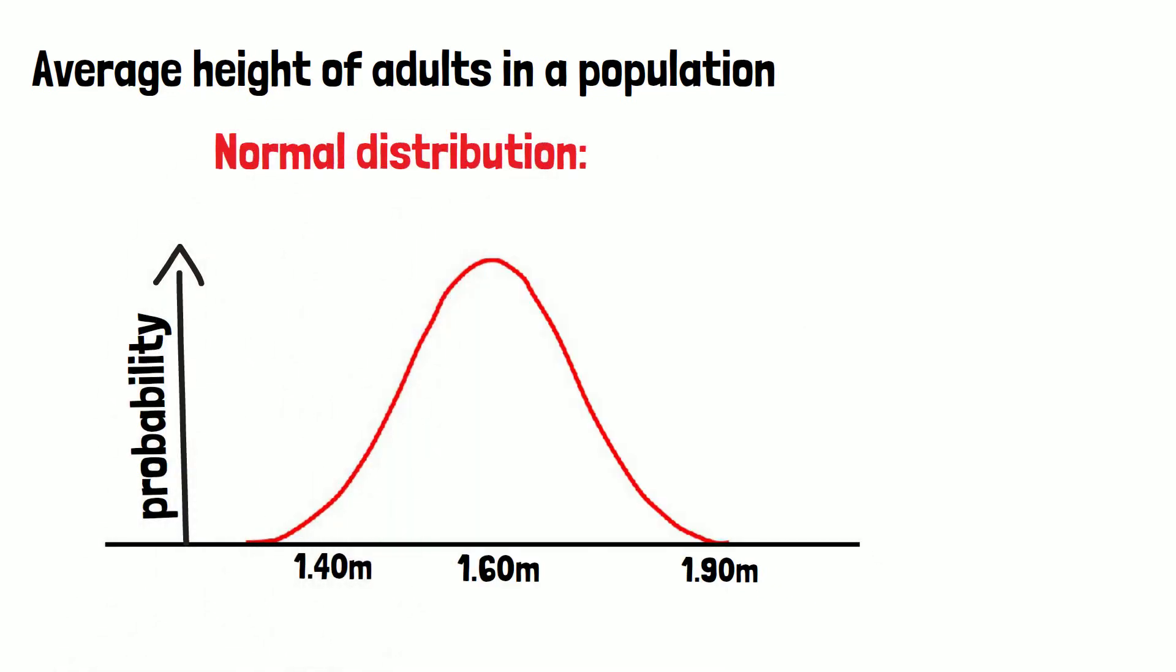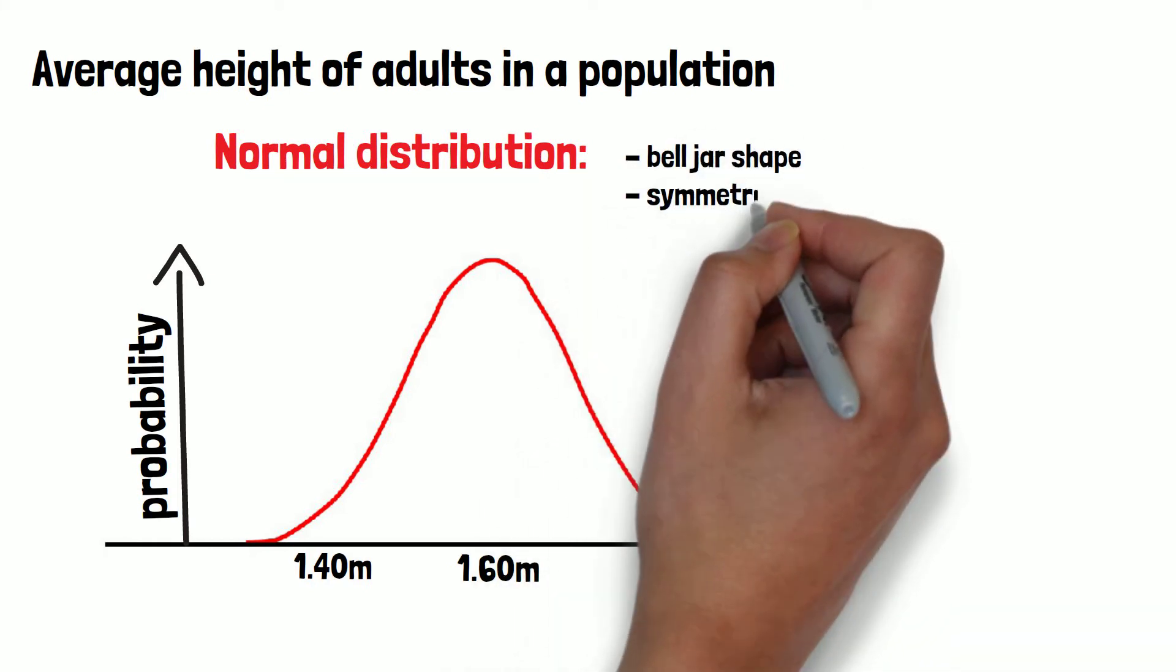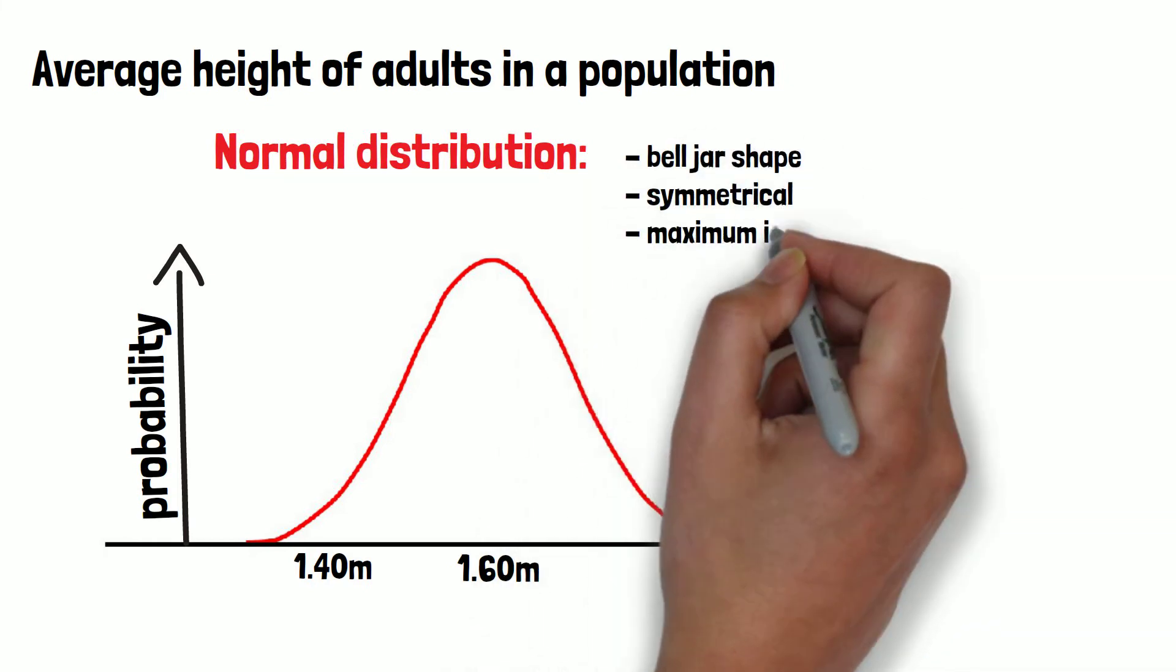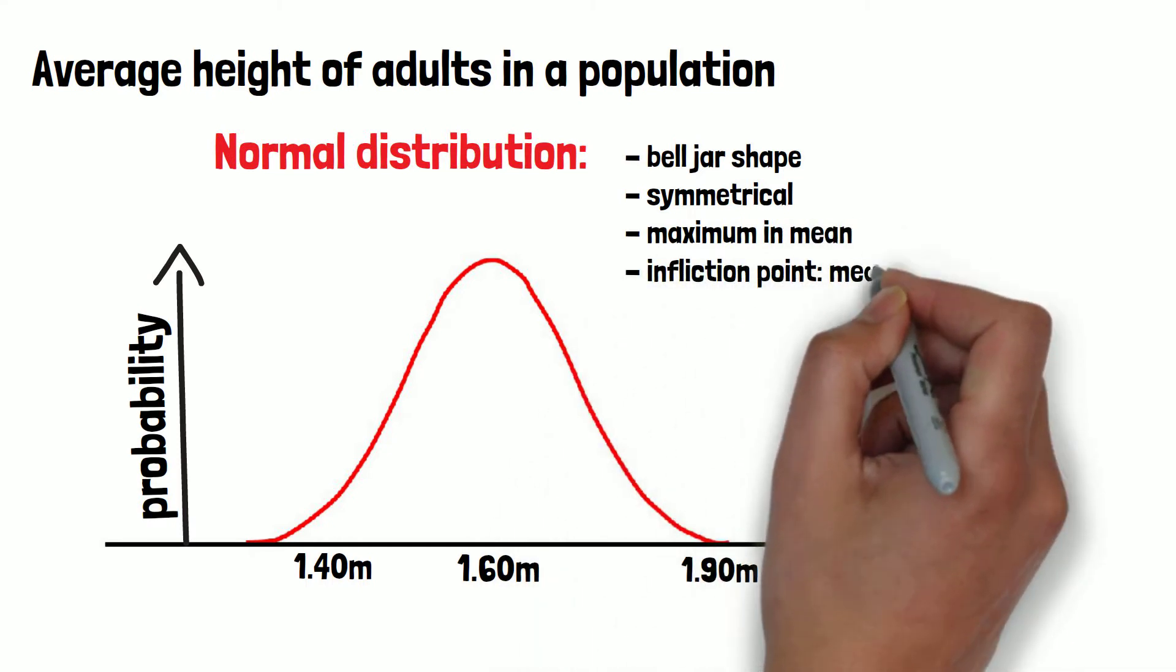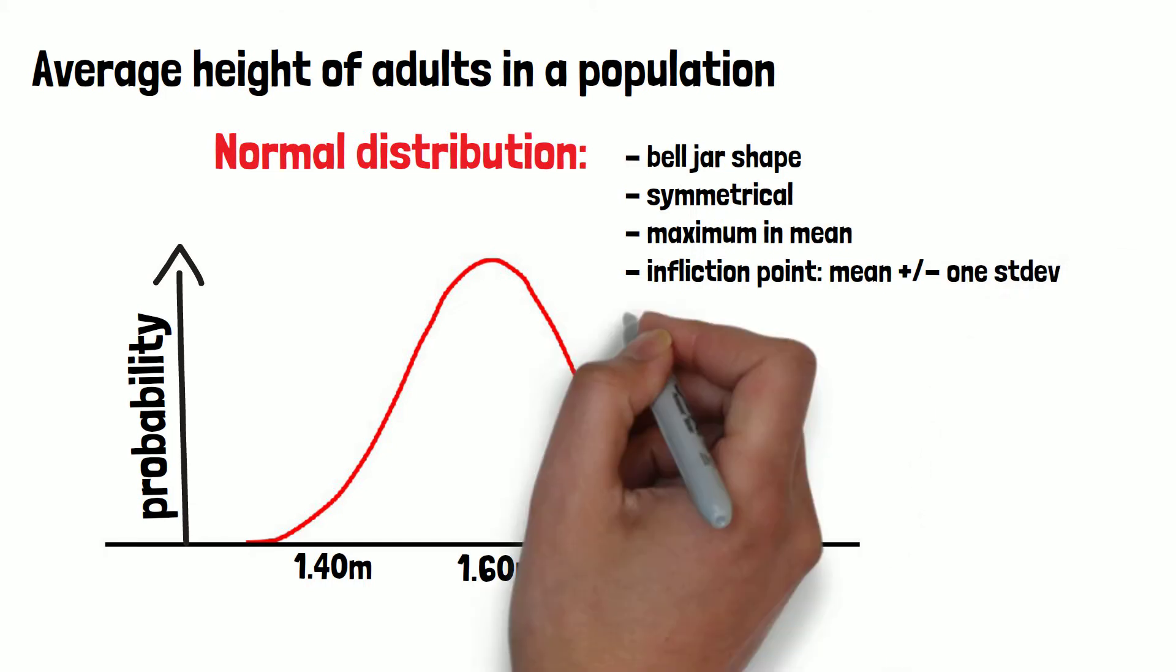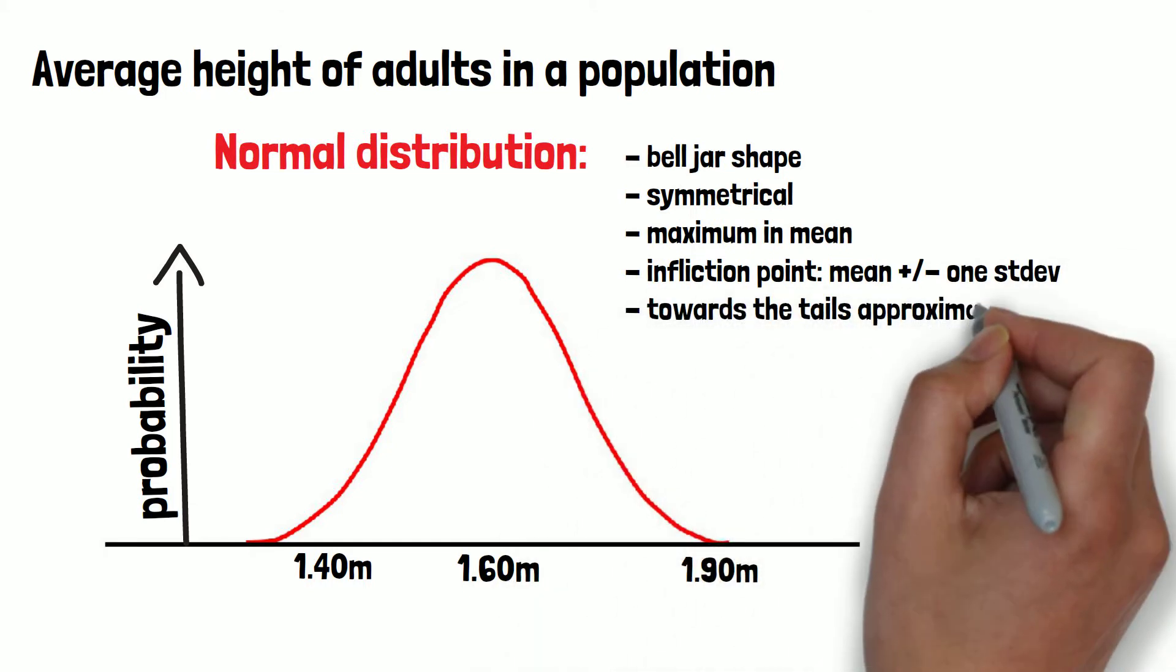The characteristics of a normal distribution are the following. It has the shape of a bell jar and is symmetrical. It has its maximum in the mean and its inflection points, so where the curve changes from the left to the right curve or vice versa, in mean plus 1 standard deviation and minus 1 standard deviation.